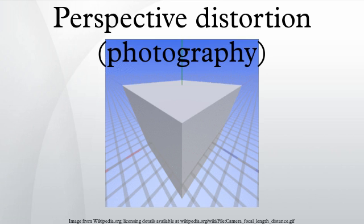Perspective distortion takes two forms: extension distortion and compression distortion, also called wide angle distortion and long lens or telephoto distortion, when talking about images with the same field size.